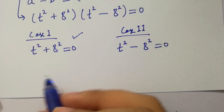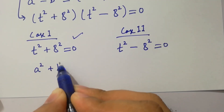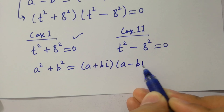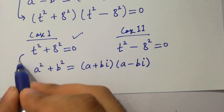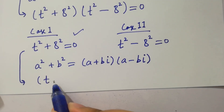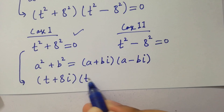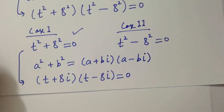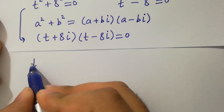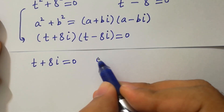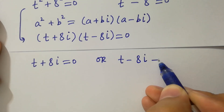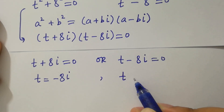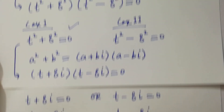From case one, we know the formula of a squared plus b squared, which equals a plus bi times a minus bi, where i is a complex number. Then it will be t plus 8i times t minus 8i equal to 0. So either t plus 8i equals 0 or t minus 8i equals 0, giving t equal to minus 8i and t equal to plus 8i.